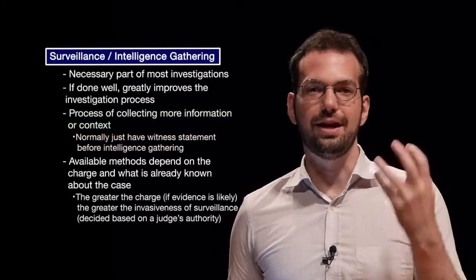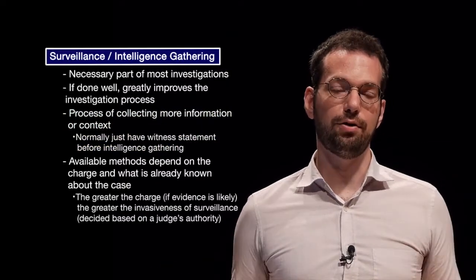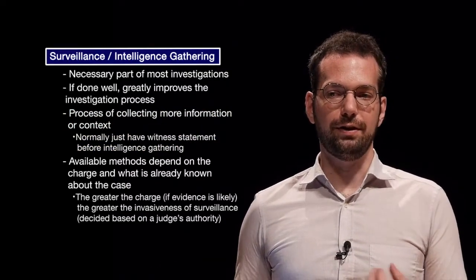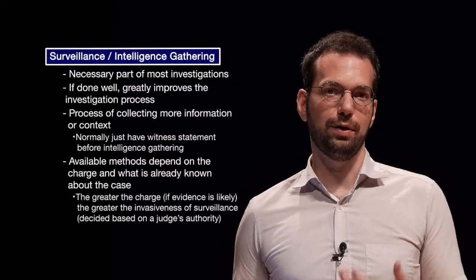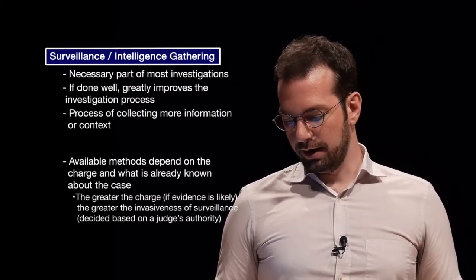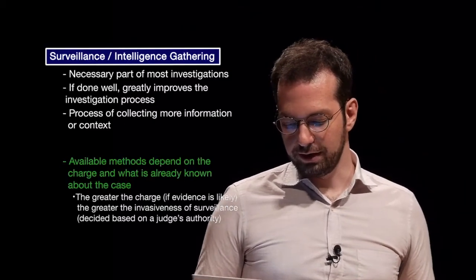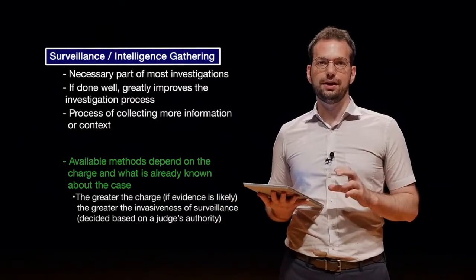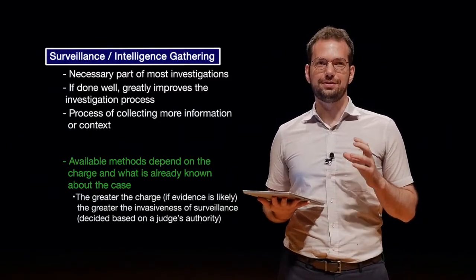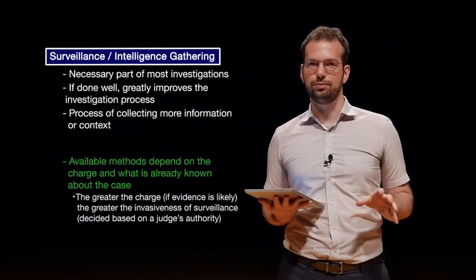We don't know yet, so we actually have to do the investigation to investigate that story. In the intelligence gathering phase, we find out more information about all of the people or organizations that may be involved and find the context. Available methods depend on the charge and what is already known about the case. Intelligence gathering, especially something like surveillance, is in most countries very difficult for law enforcement to do.